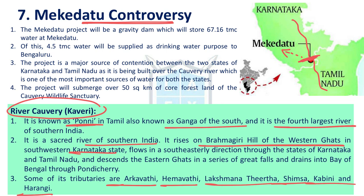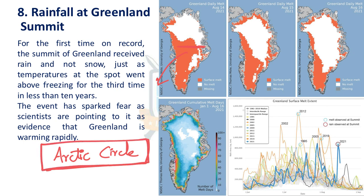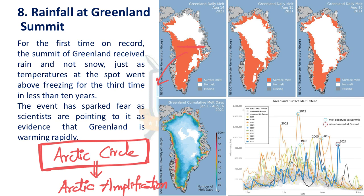Next issue is rainfall at the Greenland summit. Greenland is an island, part of North America, but belonging to Denmark, a European country. It is located within the Arctic Circle, where temperatures are generally very low, so it experiences precipitation only in the form of snow and ice. But recently, because of the increase in temperatures due to global warming and climate change — especially the phenomenon known as Arctic amplification, which means a greater impact of temperature increase in the Arctic region — this led to rainfall for the first time in recorded history in Greenland.